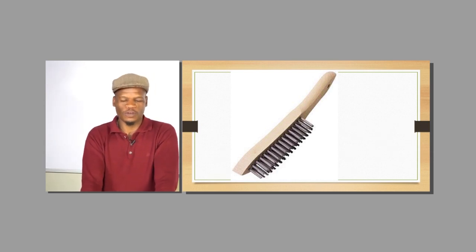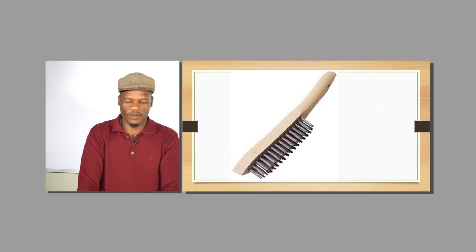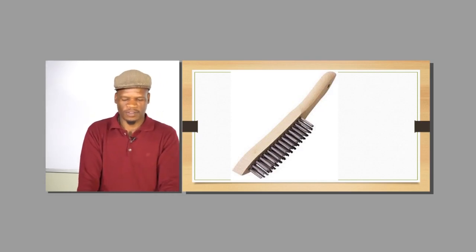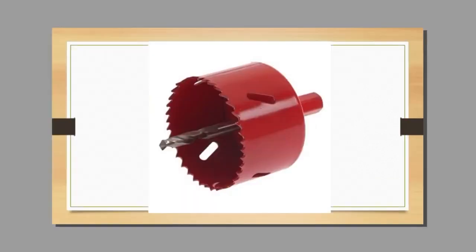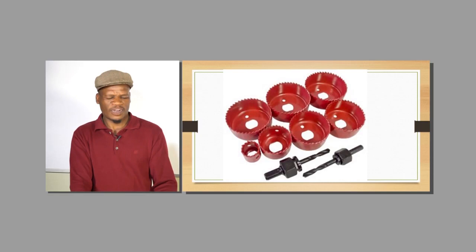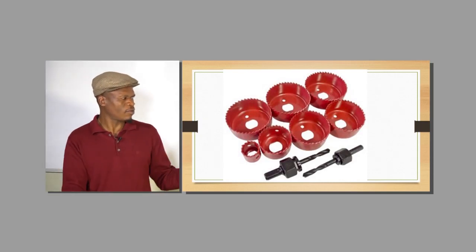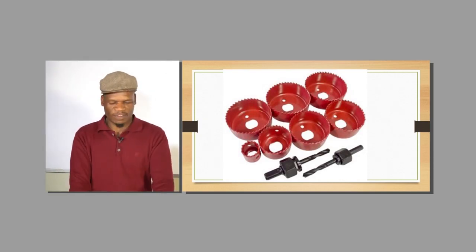You have got your steel brush, which you must use to clean up your file after you have used it before you store it, so that it can always be clean. Then we have got a hole saw, which is used to drill a hole in materials — for instance, if you want to fit a split ring. Hole saws come in different sizes so you can determine which diameter you need.